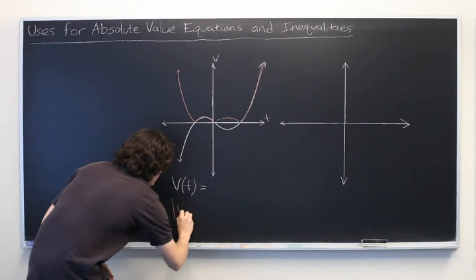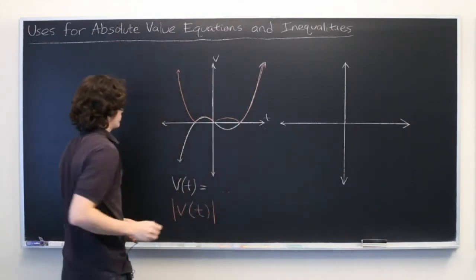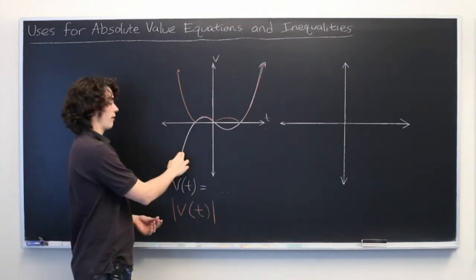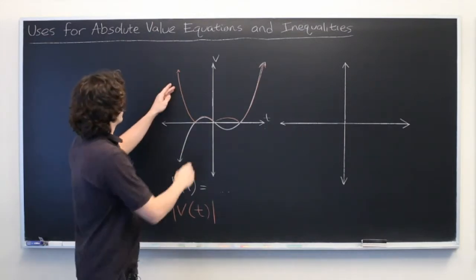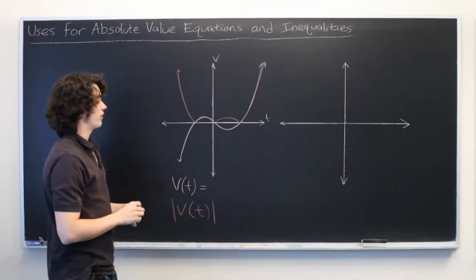Where the red is the absolute value of V of t. Where in our original equation, a point down here might indicate that a car is traveling very quickly in a southern direction. But here, all that we care about is the speed that the car is traveling, which can also be a useful piece of information.